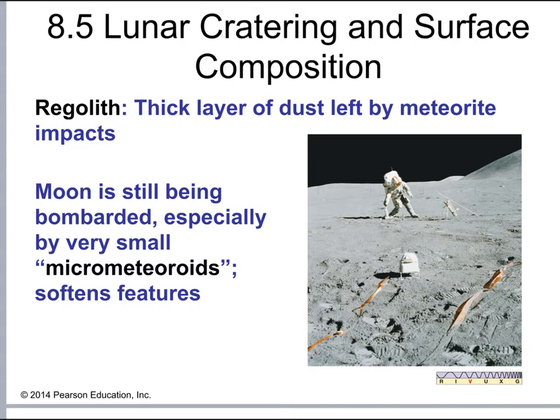Unlike dust on Earth, the Moon has no weather or erosion to smooth things out, so regolith particles can be very sharp. This was a real concern for astronauts on the Moon — the dust would get on their suits, be carried into the spacecraft, and was dangerous to breathe. Even today, very small micrometeoroids continue to bombard the lunar surface, continually contributing to this regolith material.